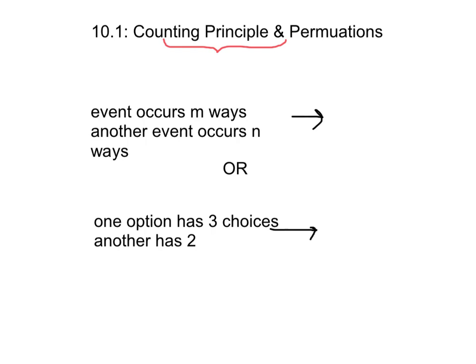This should be a T. Now, the counting principle is basically the concept of, if we have an event that occurs M ways and another event that occurs N ways, to find the combined ways they can occur, we do N times M.